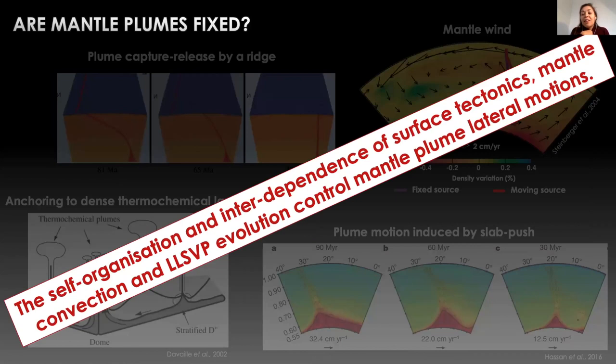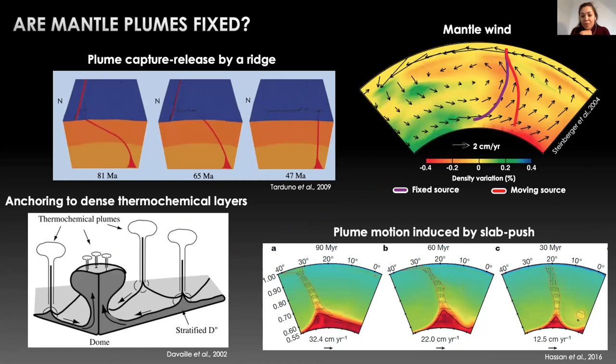Which are possibly representing LLSVPs. But while all these studies don't agree on a specific mechanism, they reveal that we have to consider the self-organization and interdependence of surface plate tectonics, mantle convection, and LLSVP evolution to understand the mechanisms leading to mantle plume lateral motions. In this study we investigated the dynamics of mantle plumes using an approach that allows us to account for all these potential dependencies.